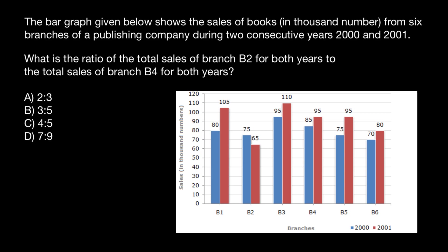The question is: what is the ratio of the total sales of branch B2 for both years to the total sales of branch B4 for both years? You can choose your answer from the options given. Here's how we are going to solve this problem.